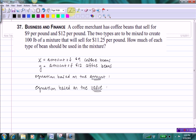Notice that the first thing I've written here are the variables that I'm going to use and the quantities that they represent. X equals the amount of $9 coffee beans and Y equals the amount of $12 coffee beans. And my goal is to come up with a system of two equations based on these variables that I can then use to solve the problem.